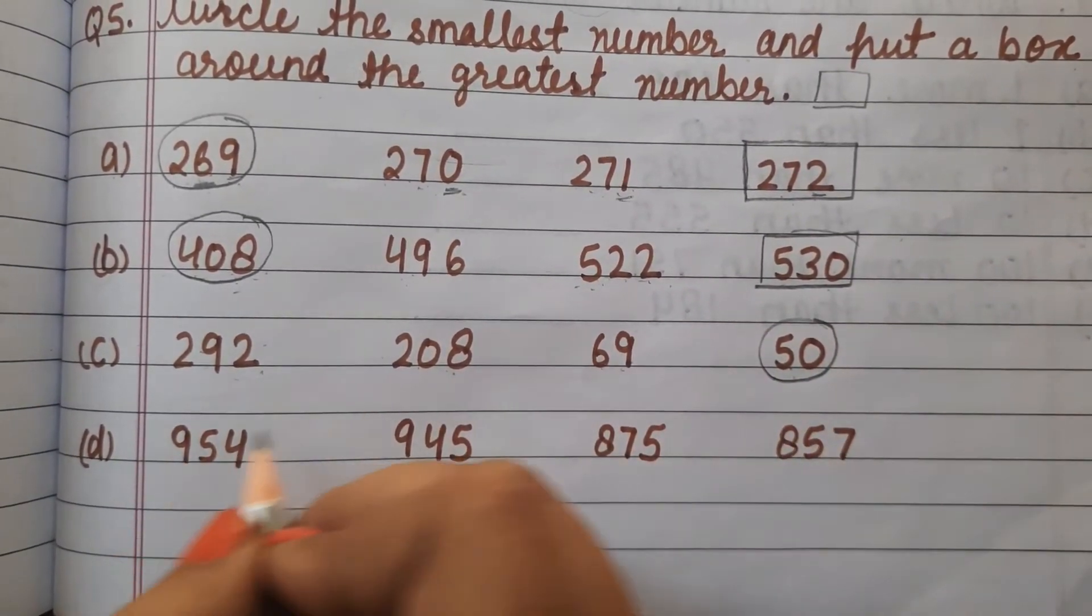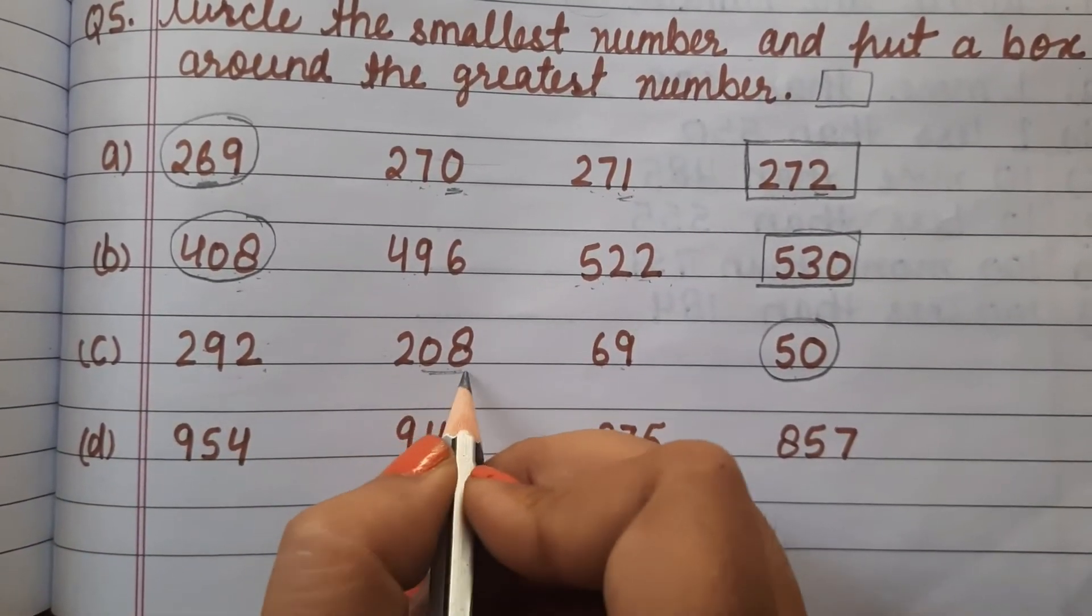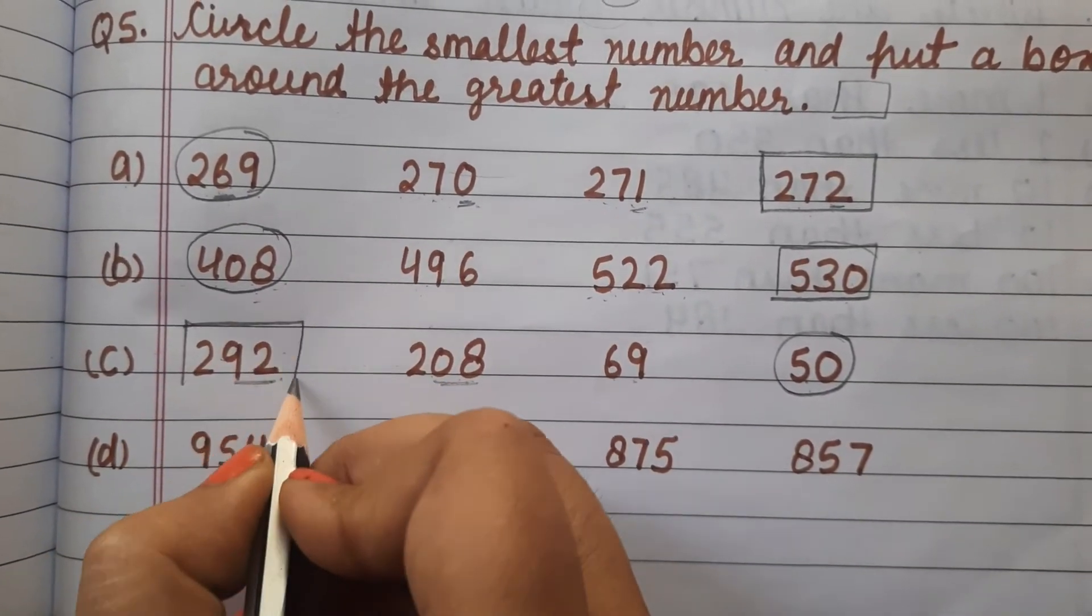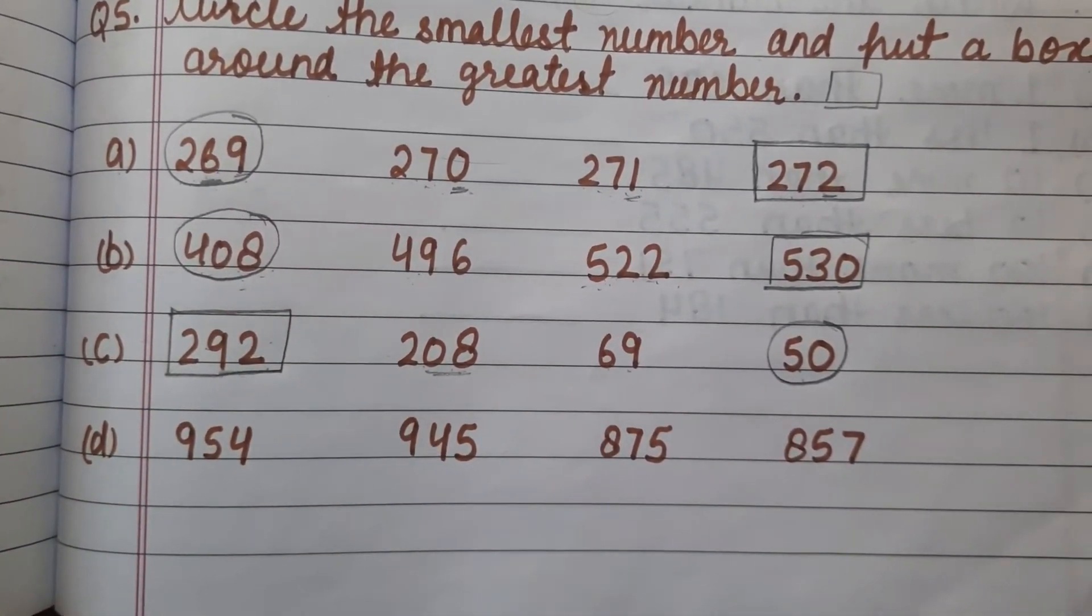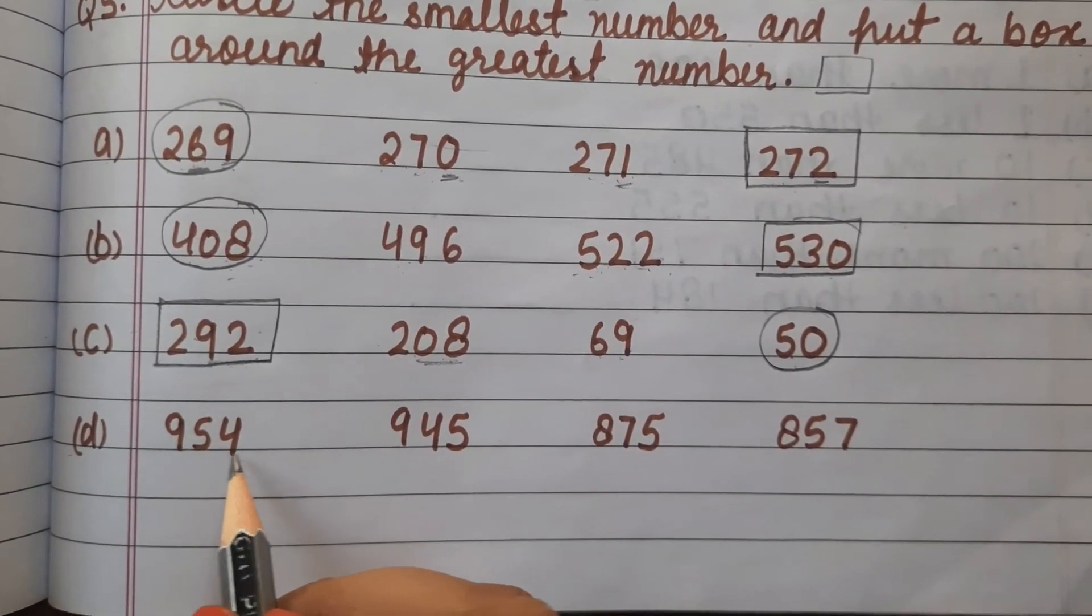Now the biggest or greatest number. Between 208 and 292, comparing 8 and 92, which number is bigger? Yes, 92. So 292 is the biggest and greatest number. Part (d) is 954.